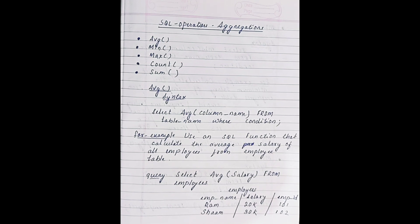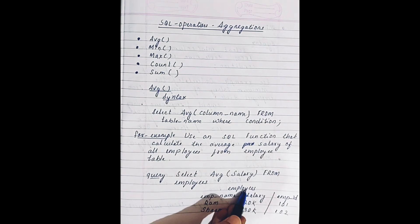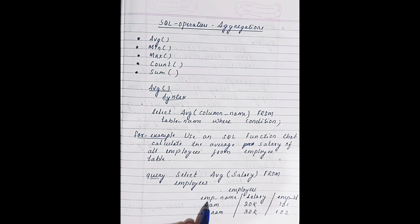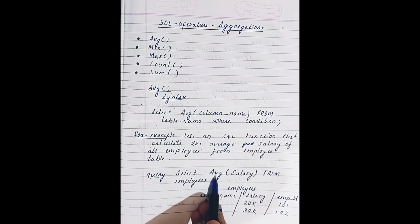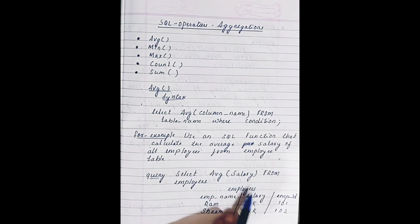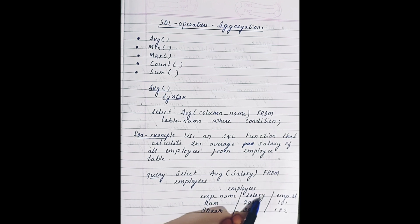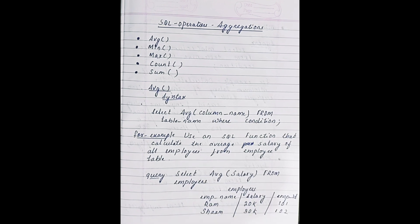Starting with the average function — as the name suggests, it is used to calculate the average of all the records of a specified column. For example, there is one employee table with different column names like employee name, salary, and employee ID. If we are calculating the average salary of this employee table and within the average function we specify the column name as salary, it will simply return the average of all the salary values.